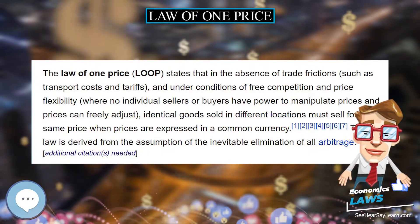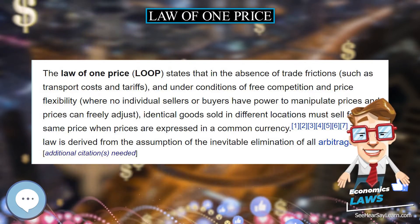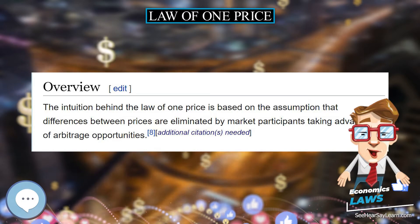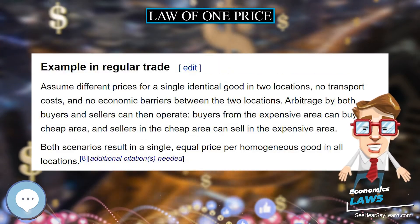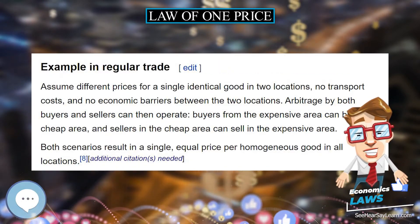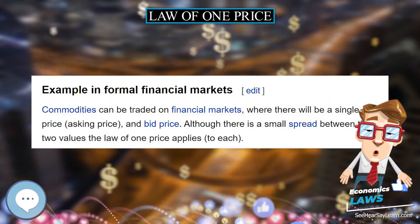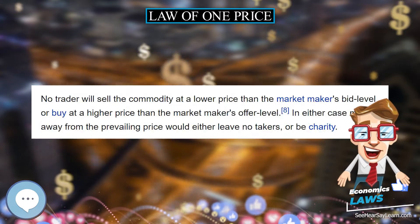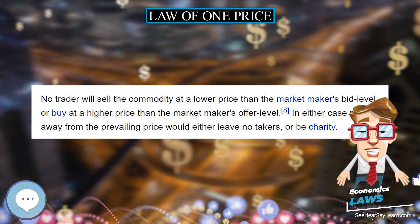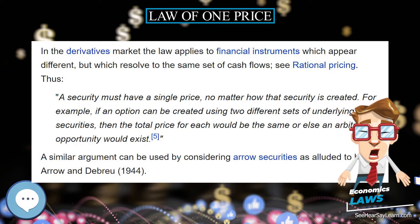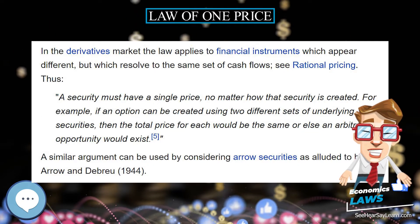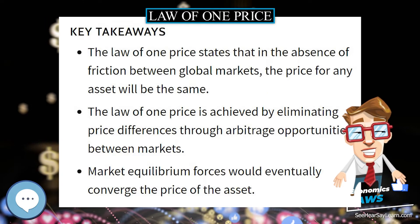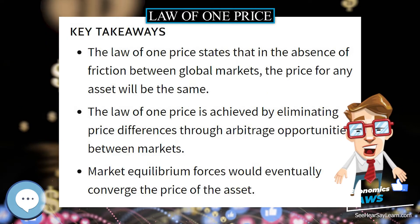The Law of One Price (LOOP) states that in the absence of trade frictions, such as transport costs and tariffs, and under conditions of free competition and price flexibility, where no individual sellers or buyers have power to manipulate prices and prices can freely adjust, identical goods sold in different locations must sell for the same price when prices are expressed in a common currency. This law is derived from the assumption of the inevitable elimination of all arbitrage.